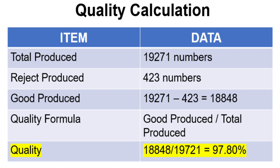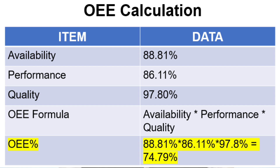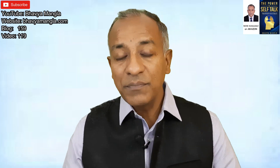For Quality: Total produced = 19,271, Rejects = 423, so Good Quality Produced = 18,848. Quality = Good Produced ÷ Total Produced = 18,848 ÷ 19,271 = 97.8%. Now with all three values — Availability 88.81%, Performance 86.11%, Quality 97.8% — putting them together using the OEE formula gives us an OEE of 74.79%.